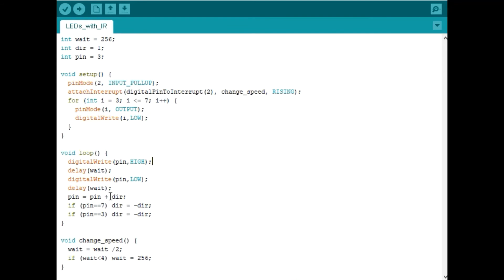If we hit the edge, if we hit number 7, we will change our direction. If we hit the other edge, pin number 3, we will change our direction again. This will make the LED sequence back and forth.